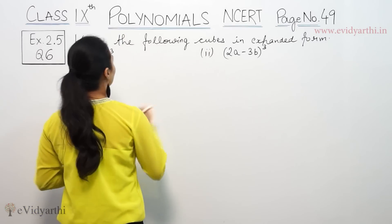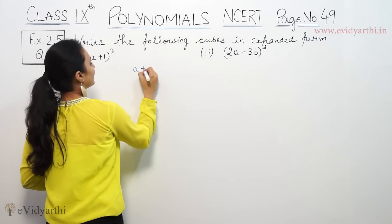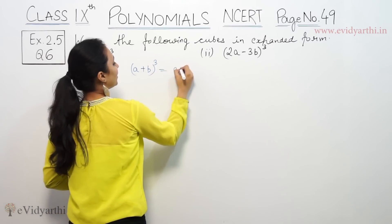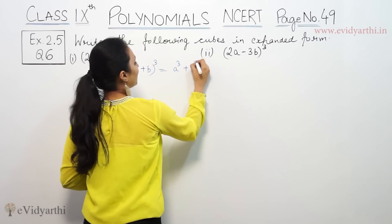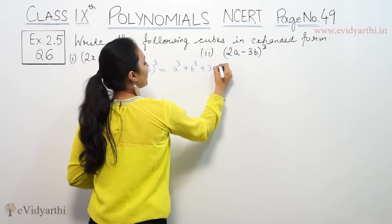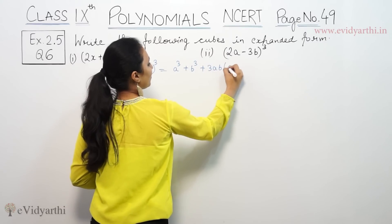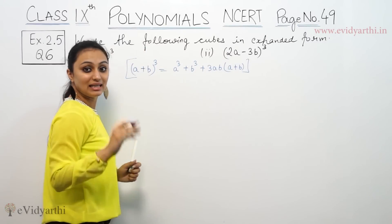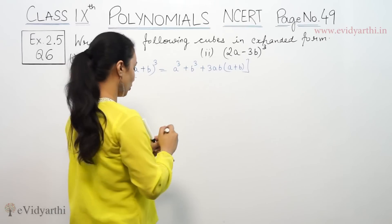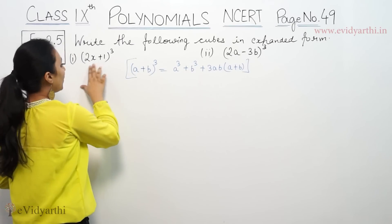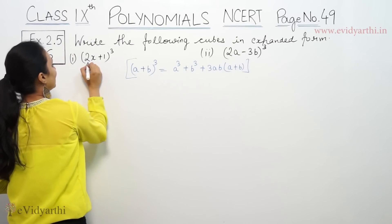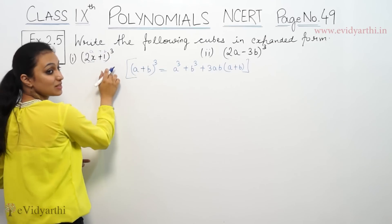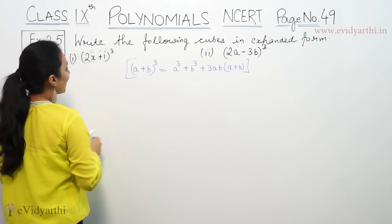In the case of cubes, we have identity names. If it is (a + b) whole cube, we have the identity: a cube plus b cube plus 3ab times (a plus b). Now we have (a + b) whole cube, same as (2x + 1), that means 2x is a and 1 is b.